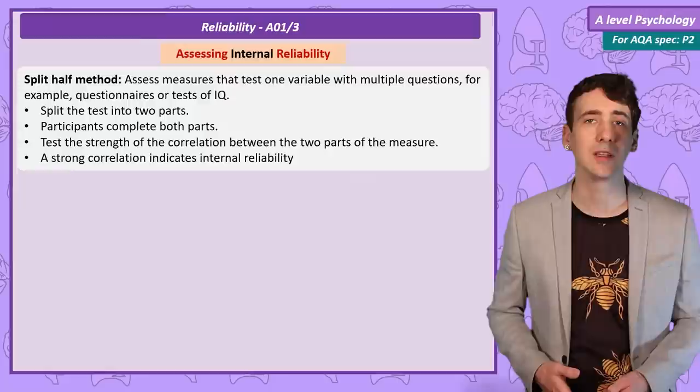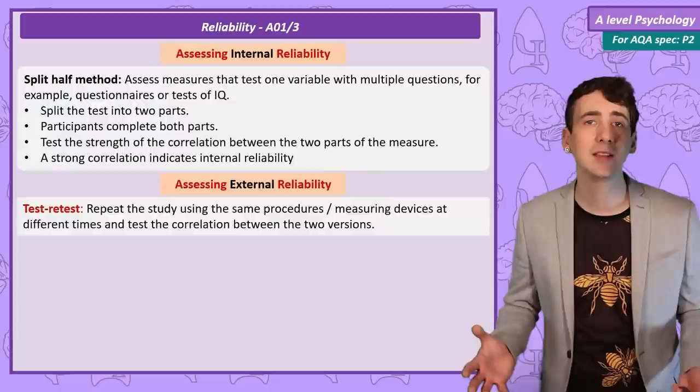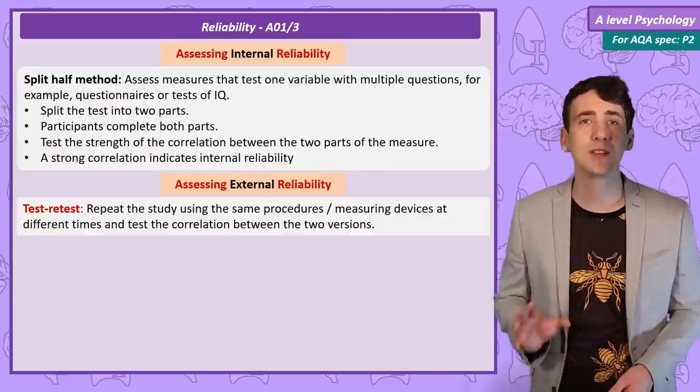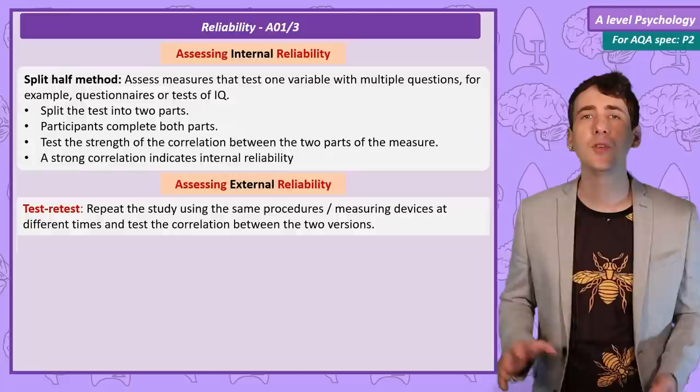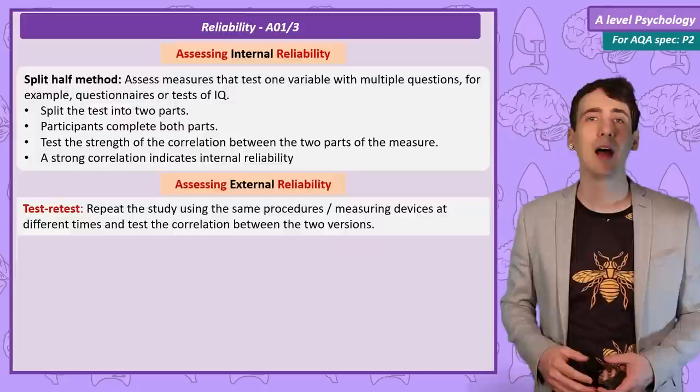One way of assessing the external reliability of a measure is called test retest, and it is exactly what it sounds like — getting the same participants to do the same study at a different time and see if they get the same results. If the results in the second study correlate strongly with the first, then this indicates external reliability. And you can imagine if exactly the same people a month later gave very different results on a questionnaire measuring personality, a test of IQ, or gave completely different responses to the same interview, then the way that test is designed is not reliable.